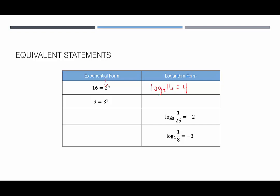Next, 9 equals 3 squared. In logarithmic form, log base 3 of 9 equals 2 — the equal side is always the exponent. We're also given log base 5 of 1/25 equals negative 2. In exponential form, 5 to the negative 2 equals 1/25. And log base 2 of 1/8 equals negative 3, so 2 to the negative 3 equals 1/8.